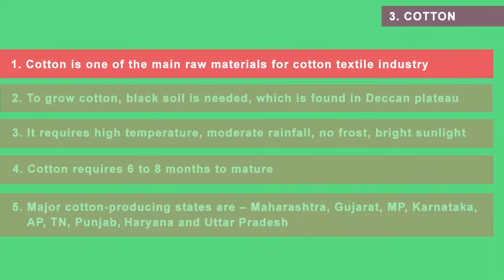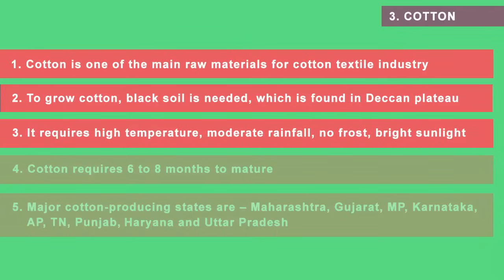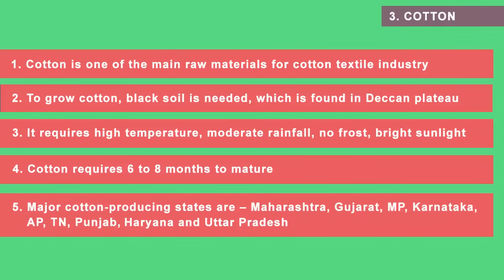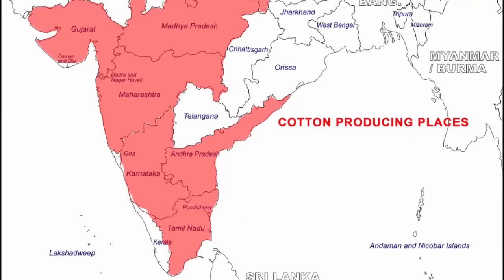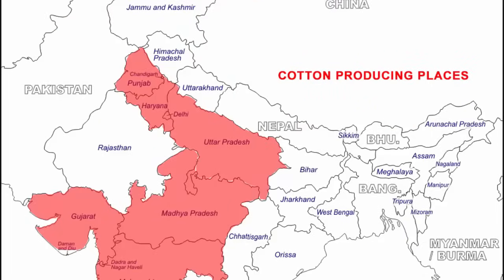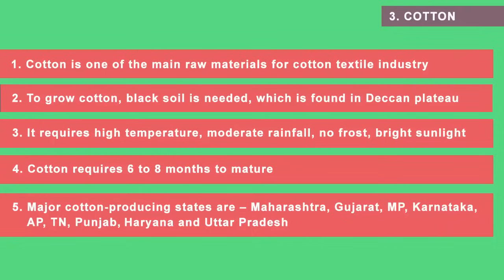Cotton is one of the main raw materials for the cotton textile industry — a multi-billion dollar industry. To grow cotton you need black soil, which is found in the regions of the Deccan Plateau. It requires high temperature, moderate rainfall, no frost, and bright sunlight. Cotton usually takes six to eight months to mature. Major cotton-producing states are Maharashtra, Gujarat, Madhya Pradesh, Karnataka, Andhra Pradesh, Tamil Nadu, Punjab, Haryana and Uttar Pradesh — most of which lie in the Deccan Plateau.